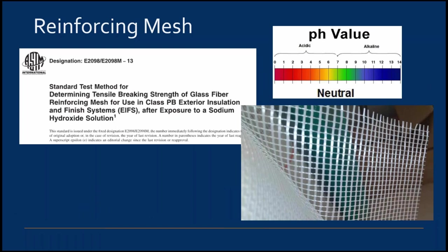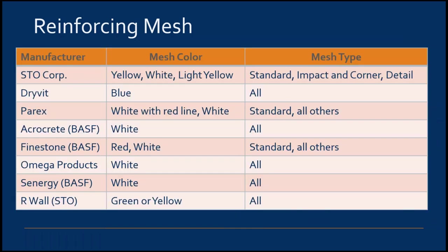One aspect of EIFS performance not often considered is the alkaline resistance of the reinforcing mesh. The alkalinity of the cementitious base coat can cause embrittlement of the glass fiber mesh, directly influencing crack resistance. EIFS manufacturers have their mesh tested to ASTM E-2098, which exposes the mesh in an alkaline environment of pH roughly 12.5 for 30 days and cannot exhibit a loss of strength greater than 50%. The reinforcing mesh can also signal which manufacturer's product was used; this table lists common manufacturers and the colors they typically use, though manufacturers can change their mesh color at any time.